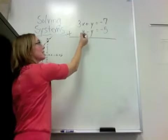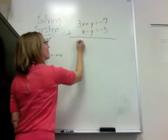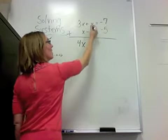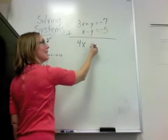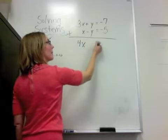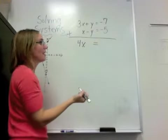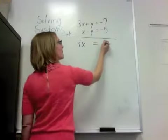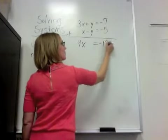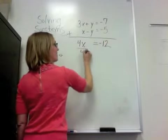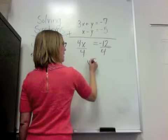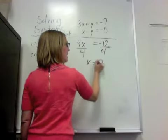Okay. 3x plus 1x is 4x. Y plus negative y. 1 minus 1 is 0, and 0 times anything is 0. So it must be 0. Negative 7 and a negative 5 give you negative 12. I need to solve this, and I get x equals negative 3.